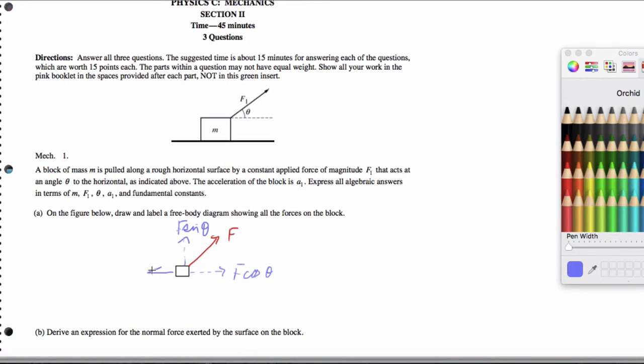We also have, pointing to the left, a friction force. We have the weight on the block due to the earth. And we have the normal force on the block due to the surface, pointing upwards.